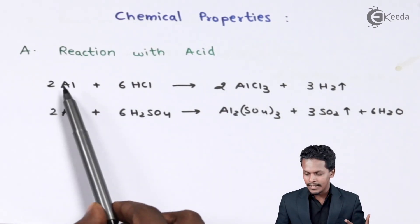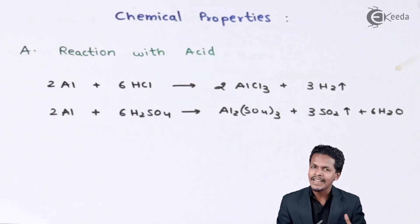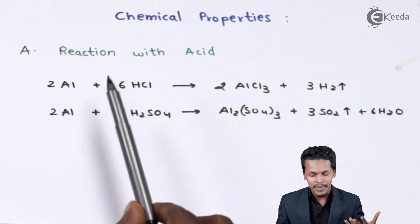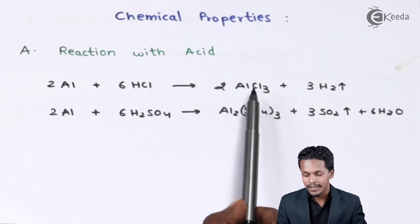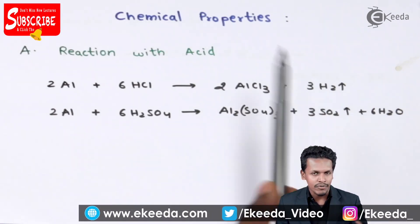It has been noted that aluminium can easily react with HCl as well as H2SO4. Let us understand the reaction. In this case, two moles of aluminium is reacted with six moles of HCl so as to form aluminium trichloride or aluminium chloride along with the evolution of hydrogen gas.